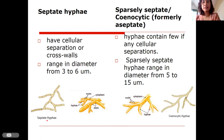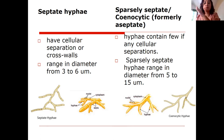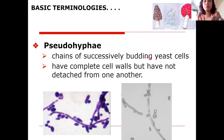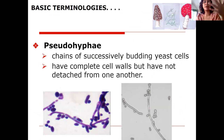Coenocytic or sparsely septate hyphae have only few or no separations. We also have pseudo hyphae — these are actually yeast cells that are successively budding. They act like hyphae, appearing to branch, but they are actually budding yeast that are elongated and have not detached from one another. It takes a skilled eye to distinguish pseudo hyphae from true hyphae.